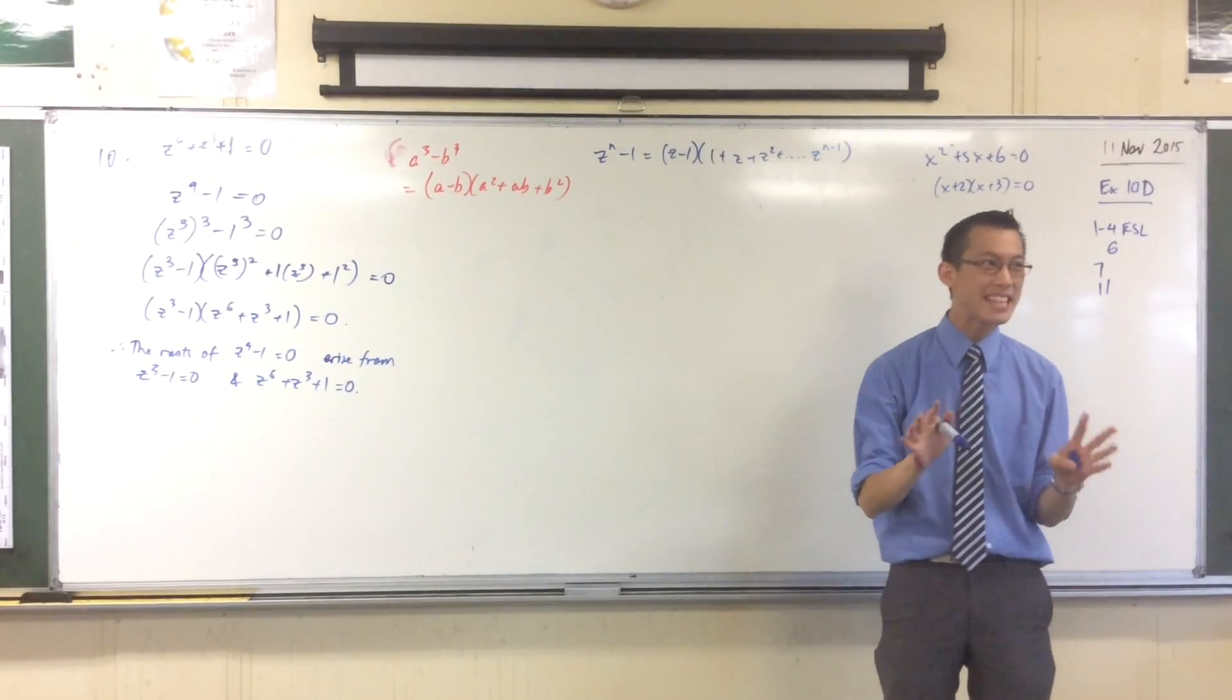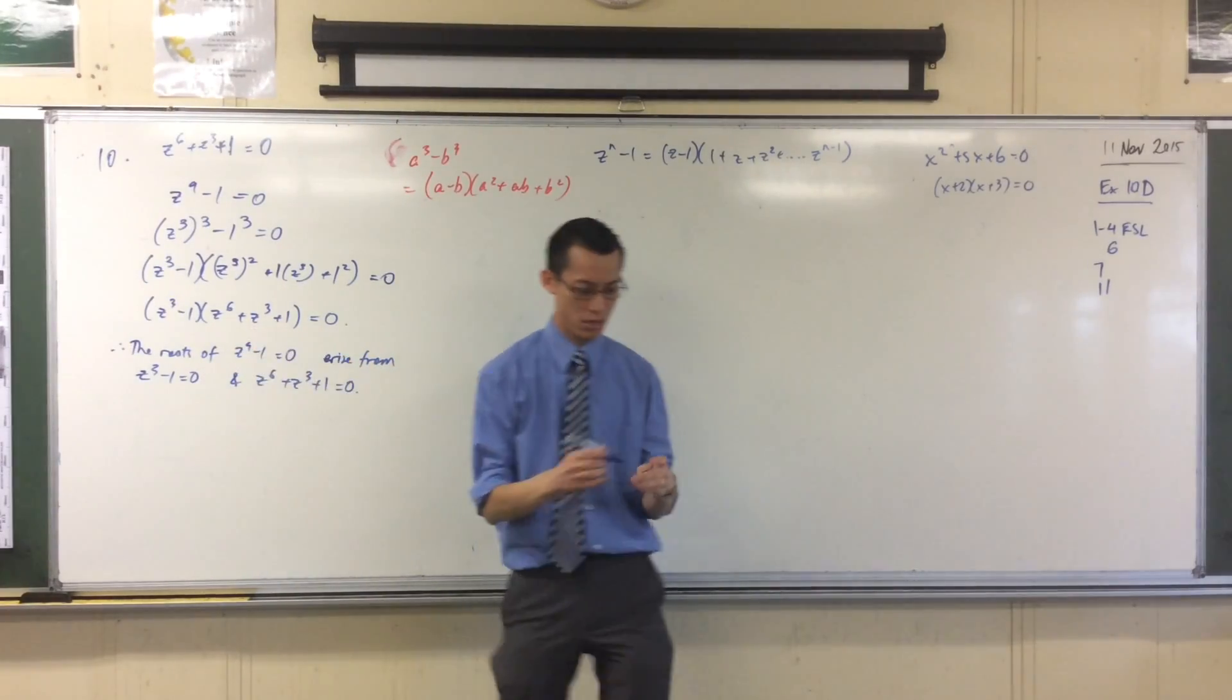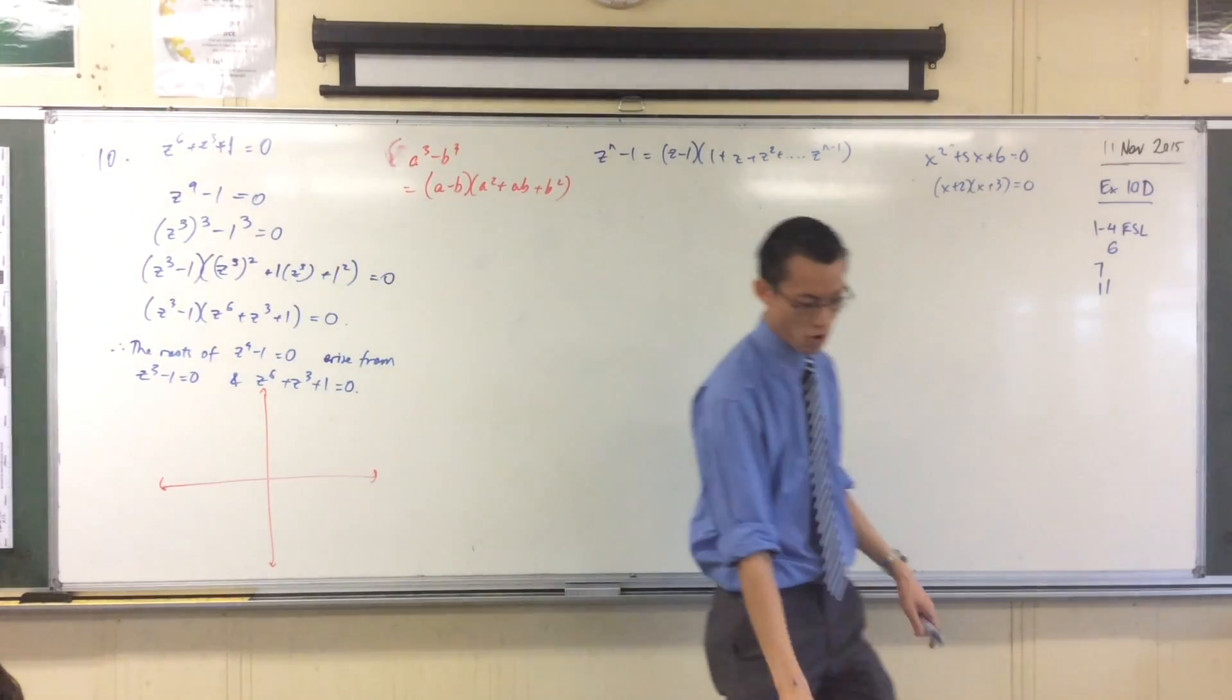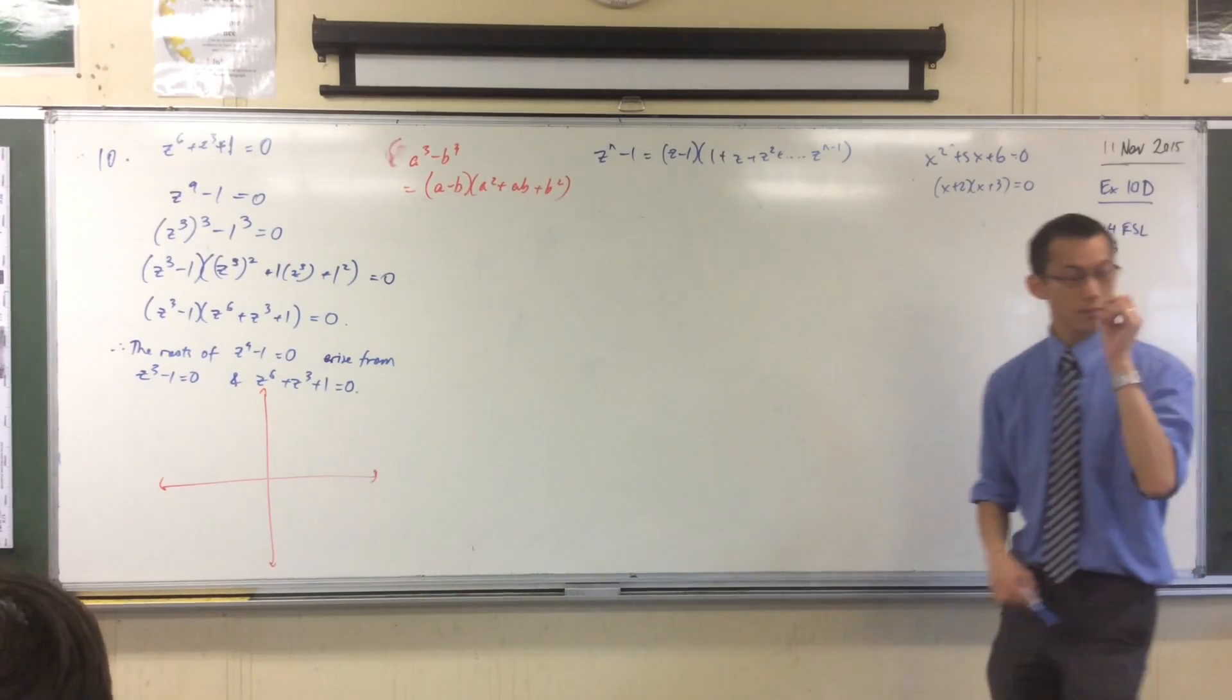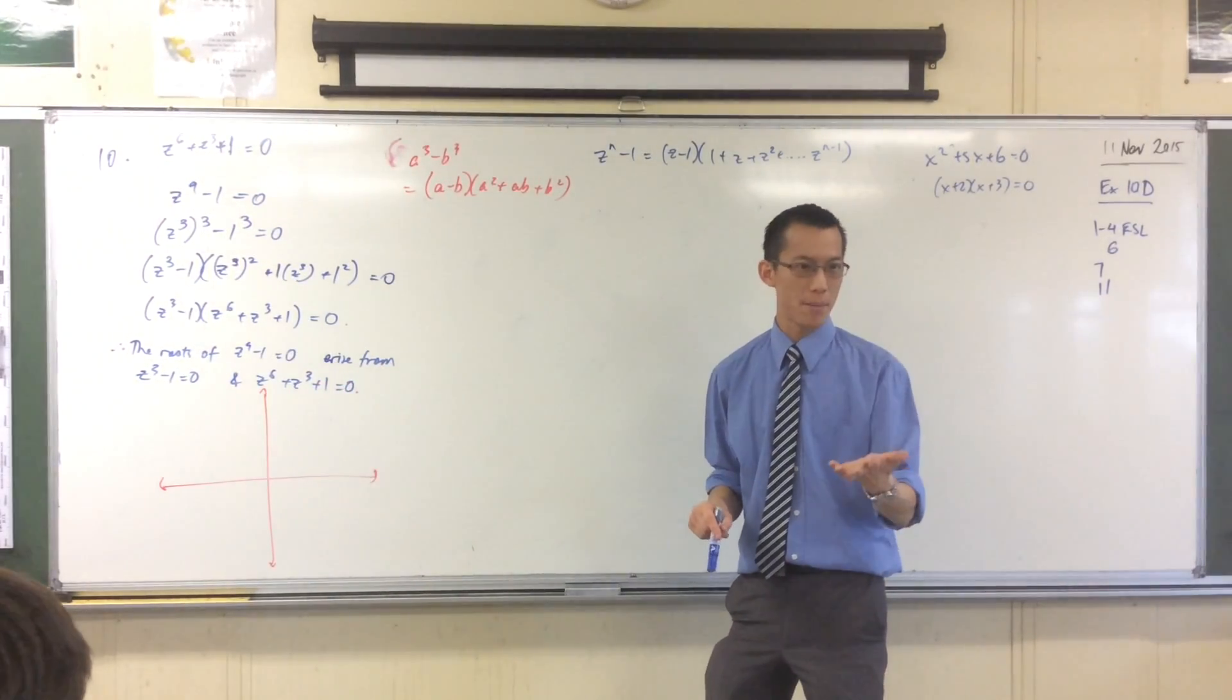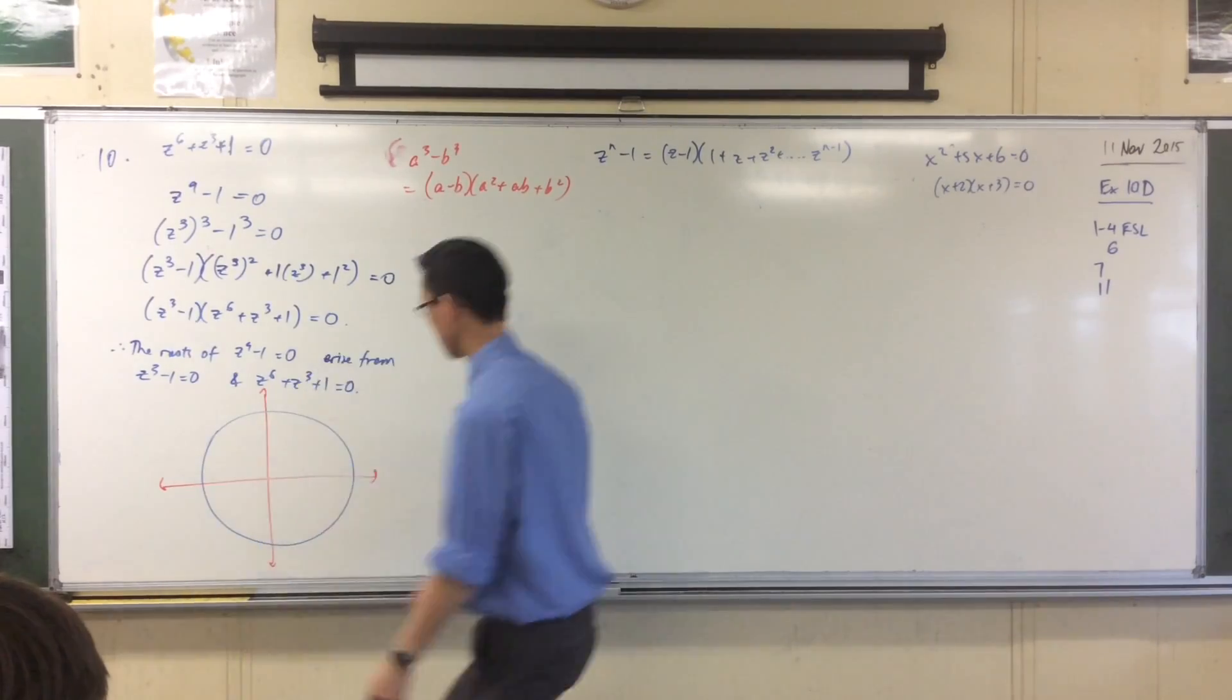Show those 9 roots on an Argand diagram. Identify which ones of them are the solutions to this. Let's just draw a quick Argand diagram. Now, because we're talking about roots of unity and unity is a real number, what do I know about these 9 roots? They're 2π divided by 9? Yes, that's right. They're 2π/9 spaced out around the circumference. And also, because of the complex conjugate root theorem, and 1's a real number, they're all going to be paired up as conjugates.